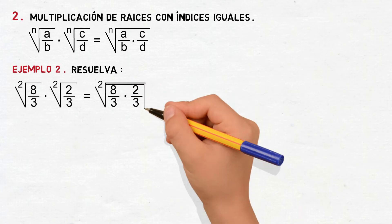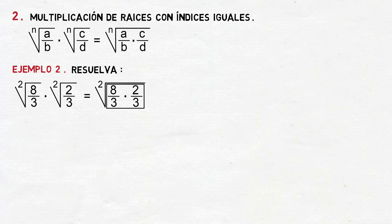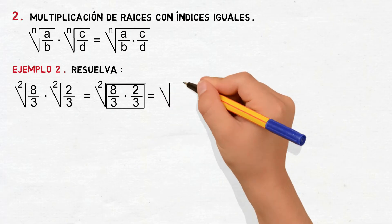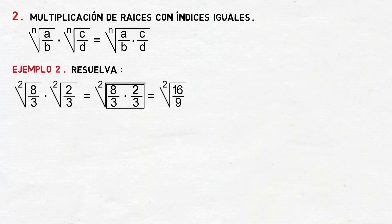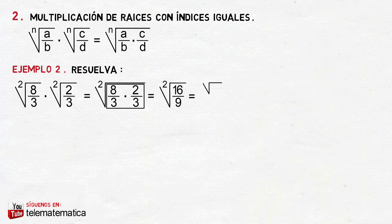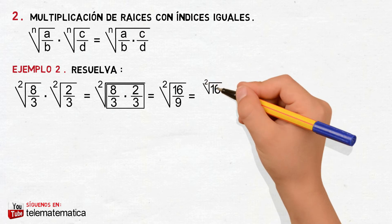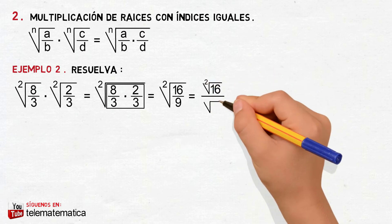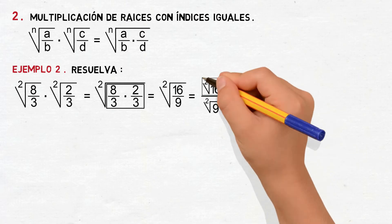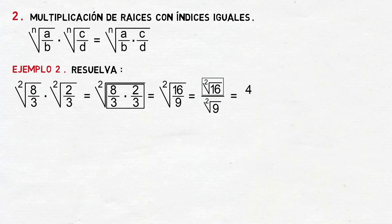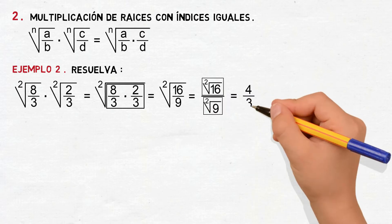Luego, resolviendo la multiplicación de números fraccionarios, esto va a ser igual a la raíz cuadrada de 16 novenos. Ahora, aplicando la propiedad de la raíz enésima de un número racional, esto va a ser igual a la raíz cuadrada de 16 dividido para la raíz cuadrada de 9. Resolviendo ambas raíces: la raíz cuadrada de 16 es 4, y la raíz cuadrada de 9 es 3. Resultado: 4 tercios.